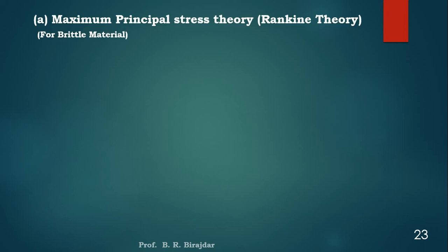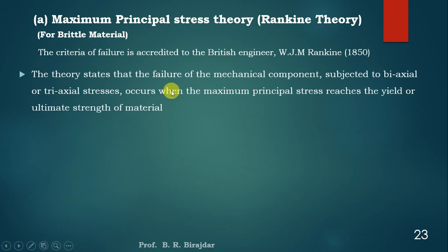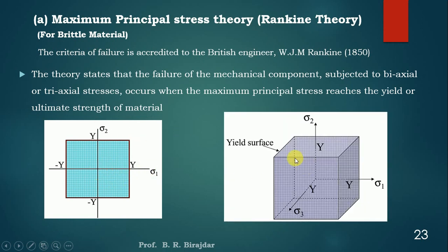Out of these, the first one we will see is the maximum principal stress theory, that is the Rankine theory. This theory is mostly used for brittle material. The criteria of failure is accredited to the British engineer W.J.M. Rankine in 1850. This theory states that the failure of a mechanical component subjected to biaxial or triaxial stresses occurs when the maximum principal stress reaches the yield or ultimate strength of the material. The 2D diagram shows stresses in x and y directions (biaxial), and the 3D diagram shows stresses in x, y, and z directions (triaxial).